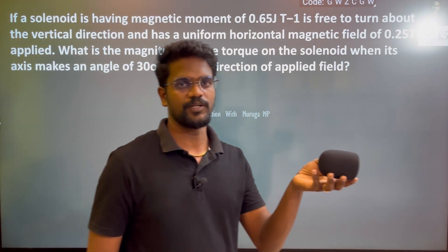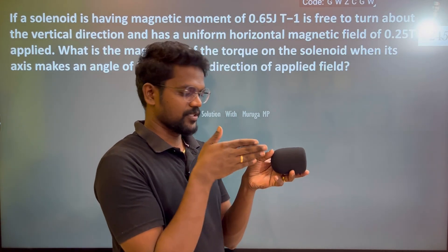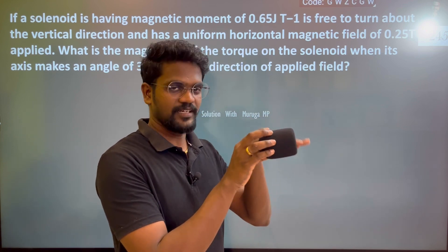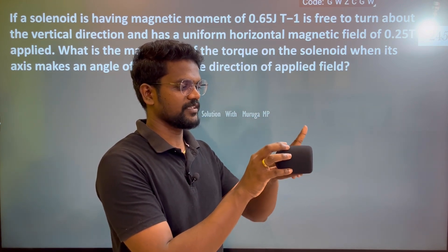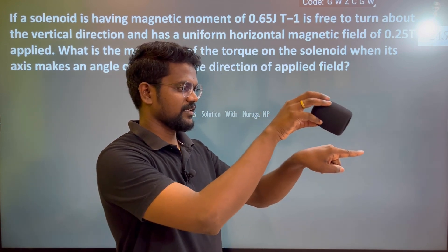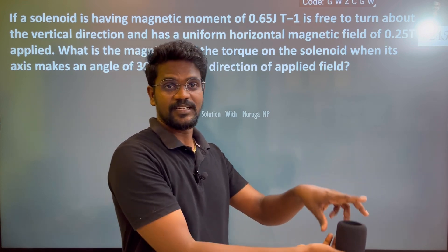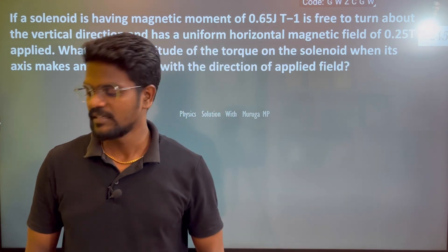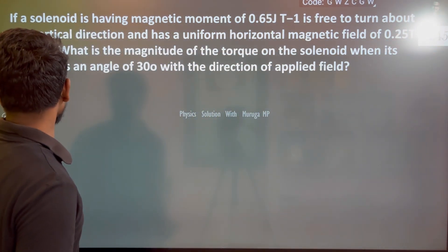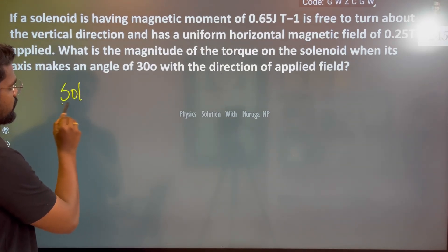Now imagine that this is the solenoid — so the solenoid would have an axis at its center. That would be the axis, and the magnetic field is at 30 degrees. So the magnetic field is like this, at 30 degrees. So let's write the solution part.